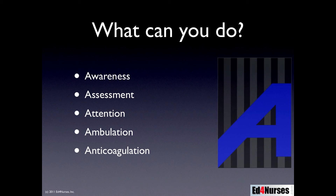Bringing the risk to the physician's attention may lead to an order for anticoagulation if the patient has increased risk. Ambulation is the fourth A — get the patient up and moving. By compressing the calf muscle, it pushes blood back up to the heart, which decreases stasis and releases enzymes that help prevent clots from forming in the thighs and pelvic area — the areas most prone to clots that can release, move up to the lungs, and cause a pulmonary embolism.